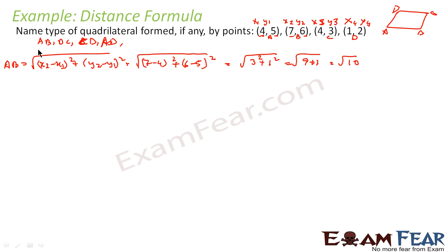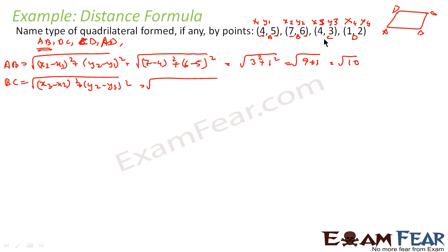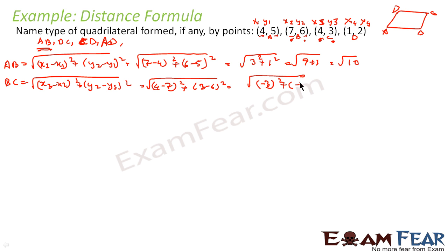Let me find BC. BC is the distance between x2, y2 and x3, y3. So root of (x3 minus x2) squared plus (y3 minus y2) squared. x3 minus x2 is 4 minus 7 equals minus 3, and y3 minus y2 is 3 minus 6 equals minus 3. So minus 3 squared plus minus 3 squared — that is 9 plus 9 — that is root of 18.